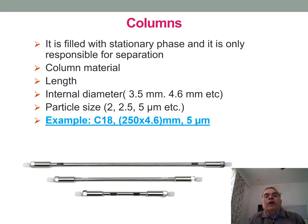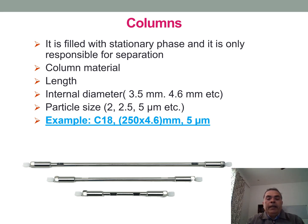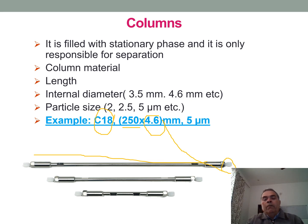In the column, separation of components takes place. It is filled with stationary phase. Here, C18 is the stationary phase of the column. 250 mm is the length of the column, 4.6 mm is the internal diameter, and 5 microns is the particle size of the stationary phase.